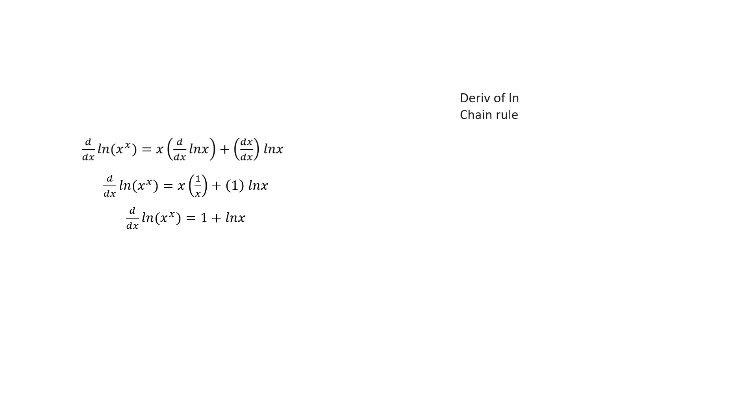Recall the derivative of the natural log of a function. It is just 1 over the function times the derivative of the function. And now equate equations to get this formula. Finally, to isolate the derivative of x to the x, we multiply both sides by x to the x, and we are done. And here we go, our first result so far. So let's put it aside for now.